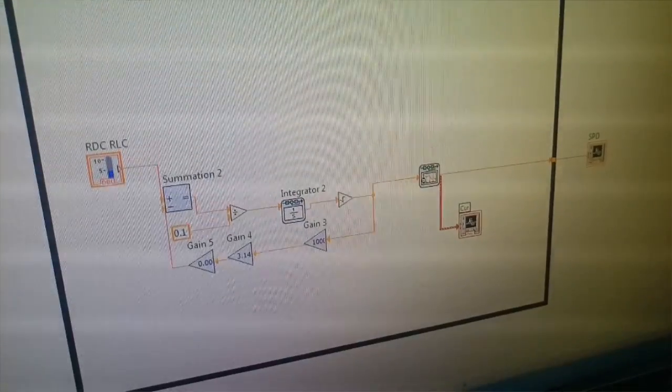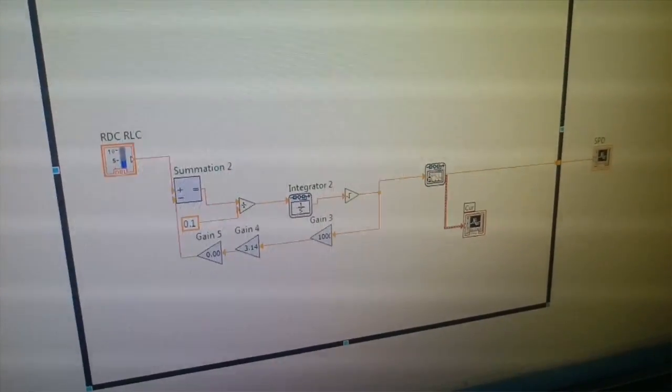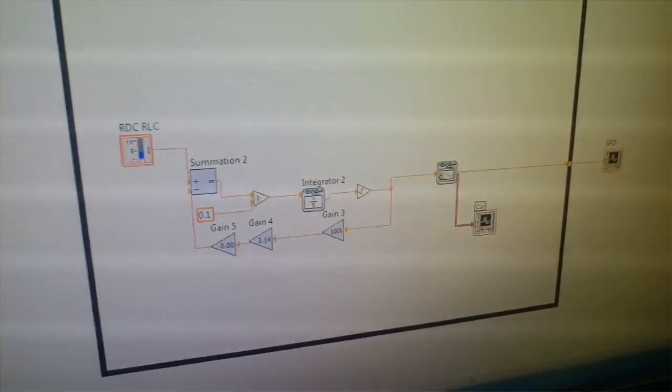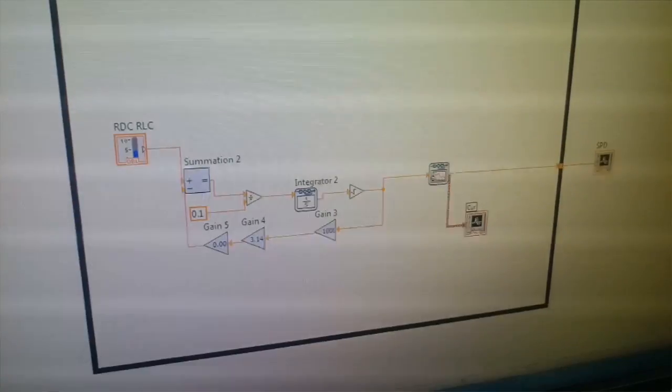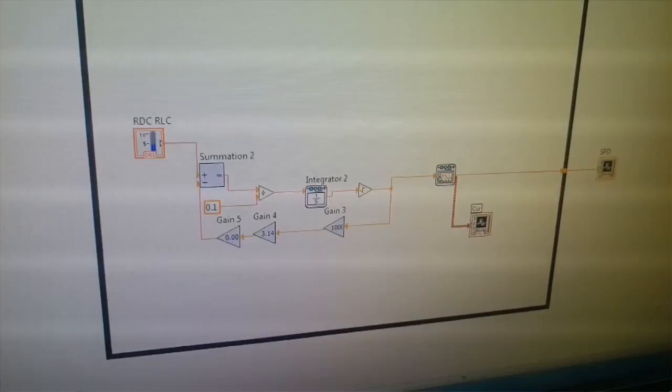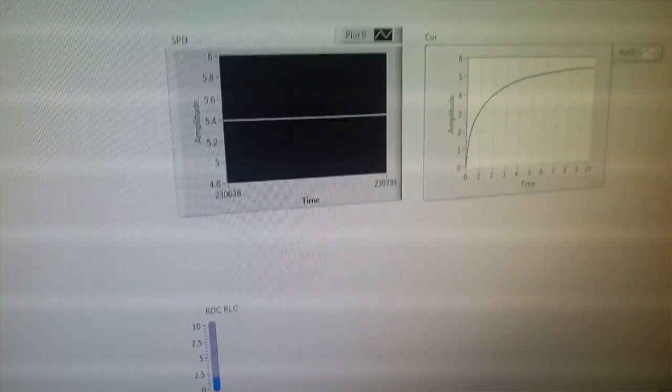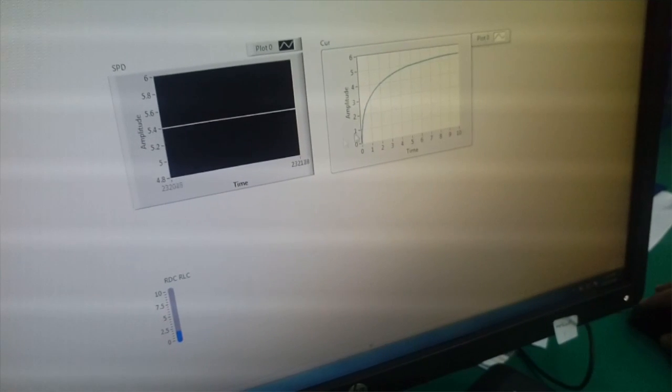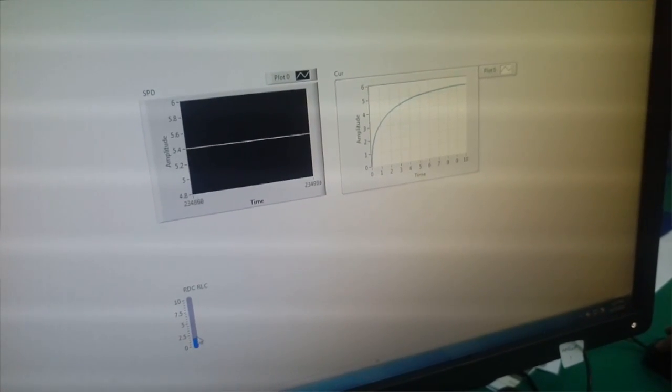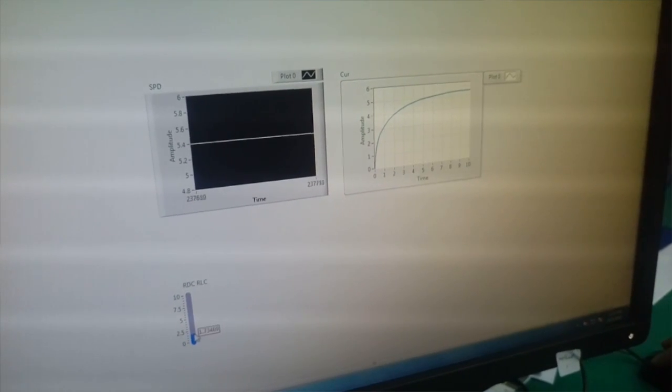Now I will show you the block diagram of water level. This is the block diagram of water level. Then I will show you the result of the block diagram of water level. The result is like this, and when we change the input, the result of the block water level will be changed.